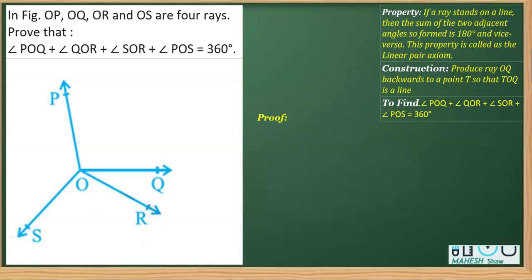As you can see, there's a figure given here. It says that these are the rays: OP, OQ, OR, and OS are the four rays. What we have to prove is that the sum of these angles - angle POQ plus angle QOR plus angle ROS and finally plus angle POS - the sum of these four angles is 360 degrees.